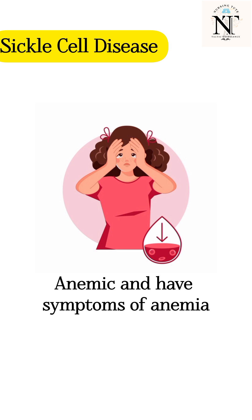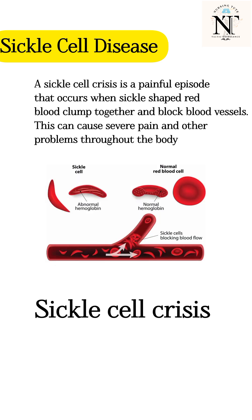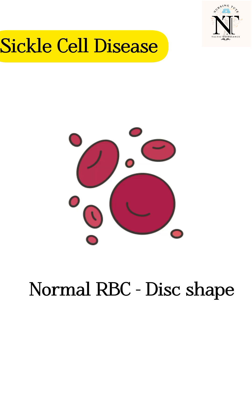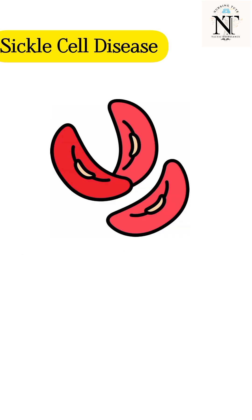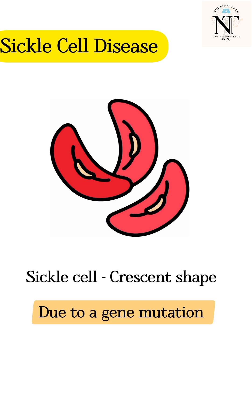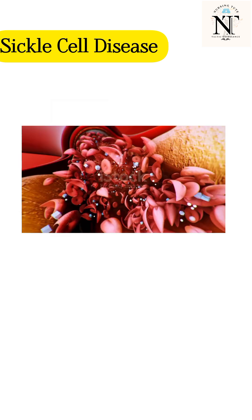The real trouble comes when the sickle cell crisis happens, and this is one of the most commonly asked questions in your examinations. Normally RBCs are disc-shaped and flexible so they can move easily through the blood vessels. But in sickle cell disease, RBCs are misshapen — typically crescent or sickle-shaped — due to a gene mutation.